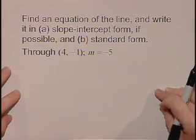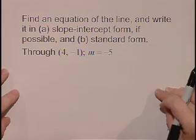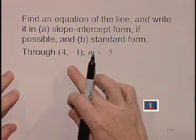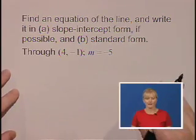Let's find an equation of the line and write it in (a) slope-intercept form if possible, and (b) standard form, through the point (4, -1), where m equals -5.